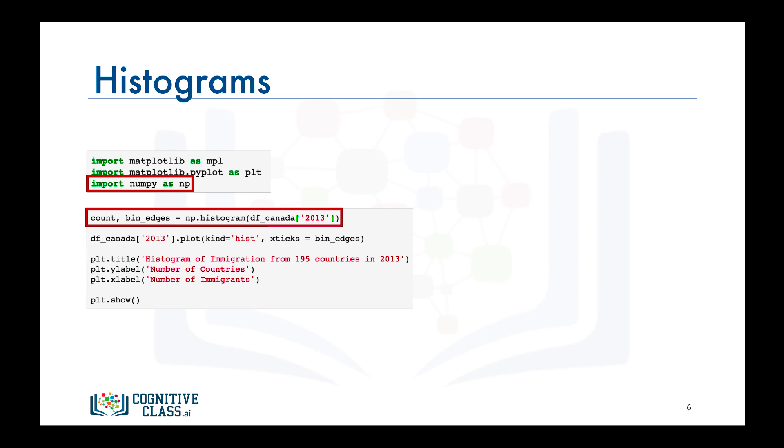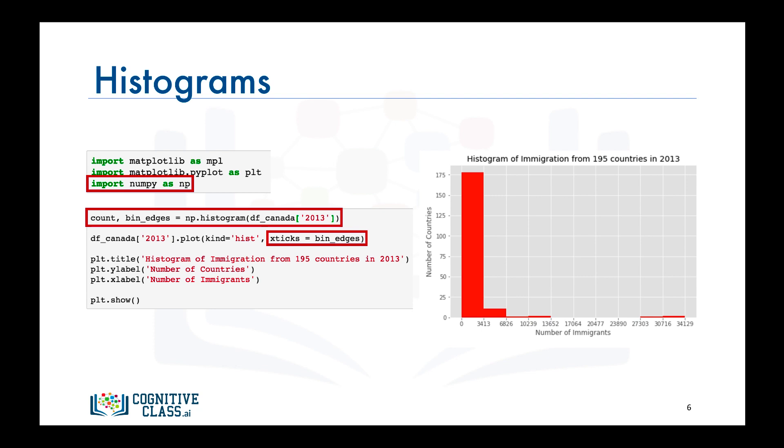We then pass these bin edges as an additional parameter in our plot function to generate the histogram. And there you go. A nice looking histogram whose bin edges are aligned with the tick marks on the horizontal axis.